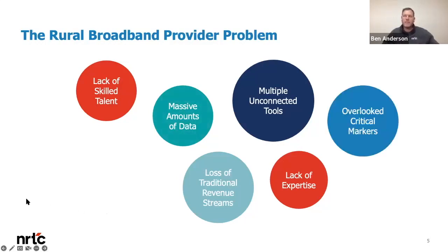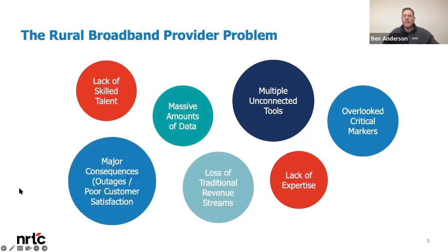With each of these problems being very interconnected and impacting each other, the combination really means that critical markers within a network — those that could identify whether a customer was having a poor experience or a network component was nearing failure — are often overlooked. Overlooking those types of events often leads to reactive misses with major consequences like outages, poor customer experiences, and low customer satisfaction.